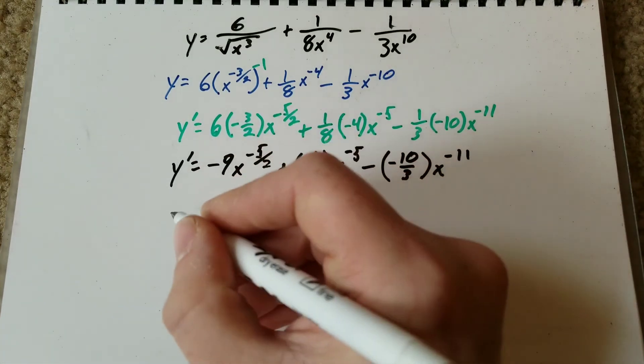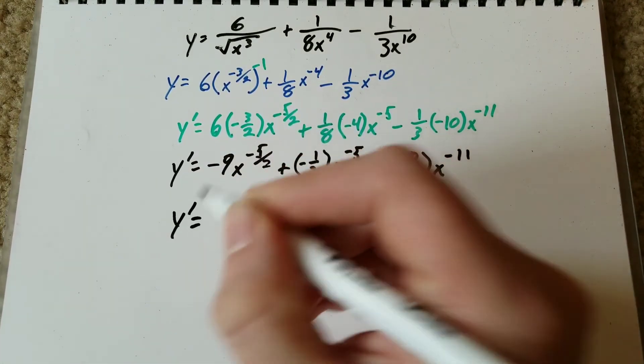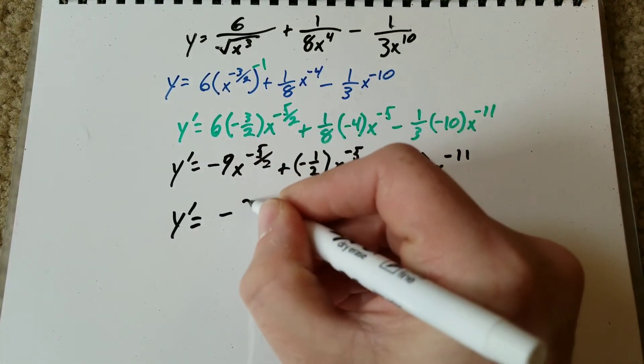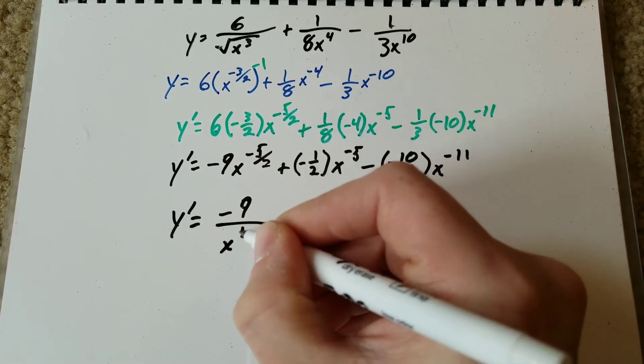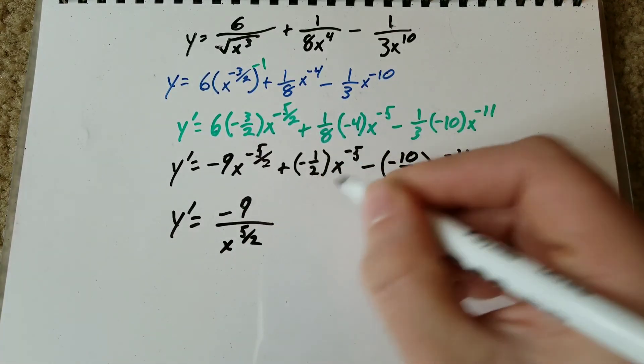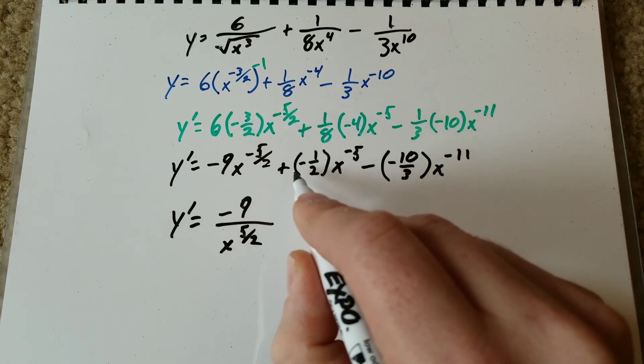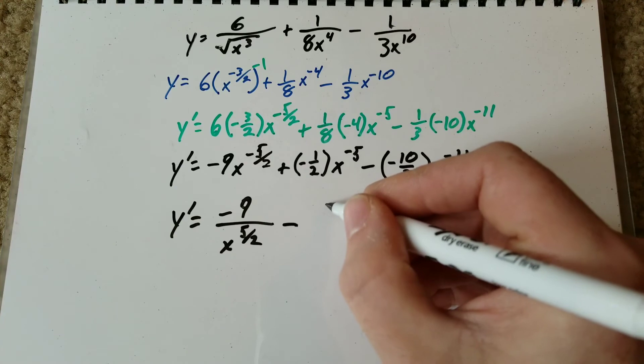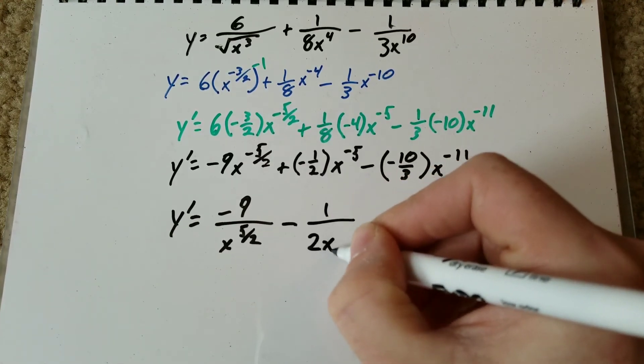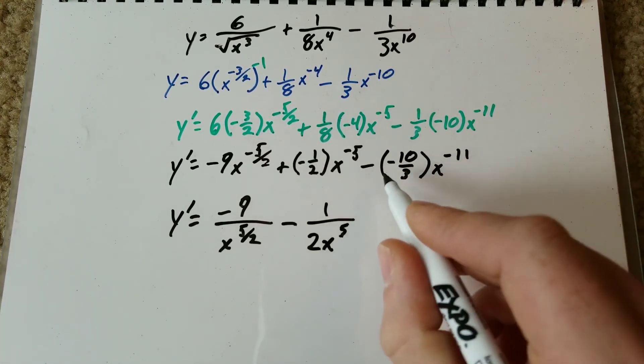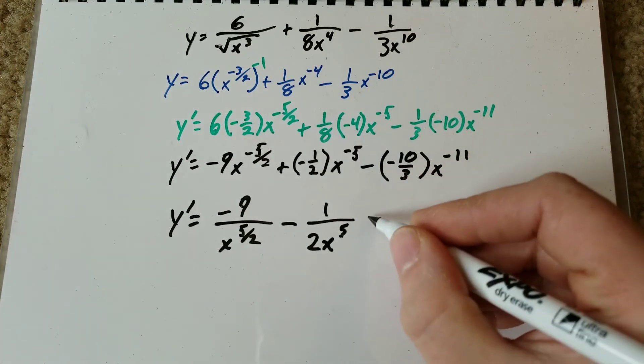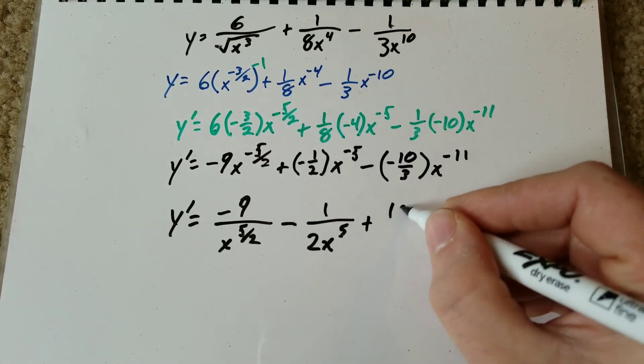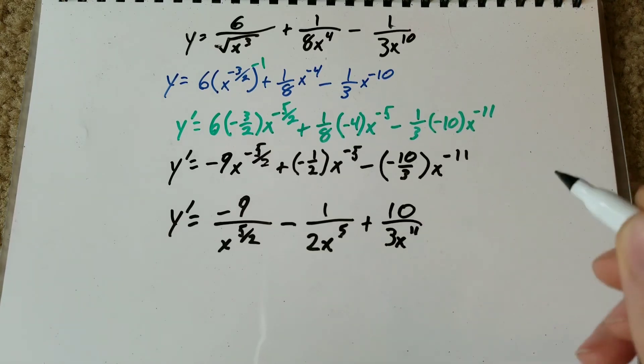So we've got y prime equals negative nine over x to the five halves. A negative sign and a positive sign gives you negative one over two x to the fifth. And we got negative and negative, so this is going to be a positive 10 over three x to the 11.